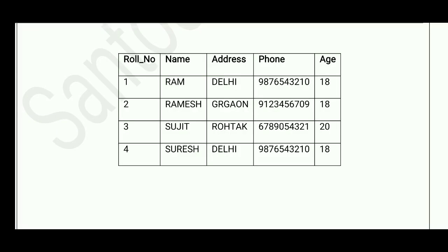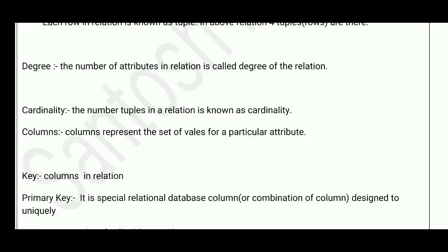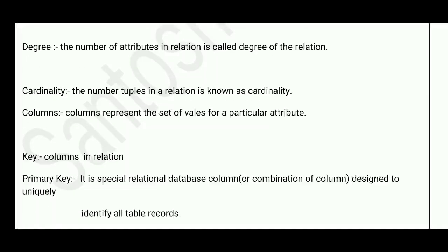One key point: vertical arrangement is called a column and horizontal arrangement is called a row. The column contains the same type of data for all entities, while a row contains all data of a single user. Keep these two statements with you to clearly understand column and row. Degree means the number of attributes in a relation — i.e., the number of columns. Cardinality means the number of tuples in a relation — i.e., the number of rows.